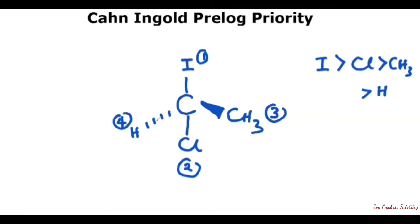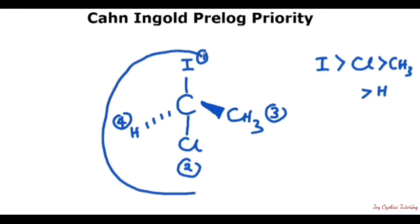We then draw out our arrow from 1 to 2 to 3. Looking at this arrow, we can see that this goes counterclockwise and goes through the left-hand side, so the configuration is S.